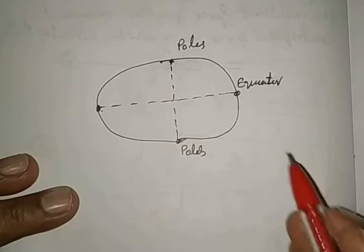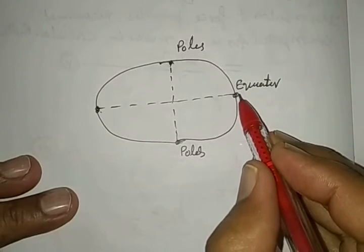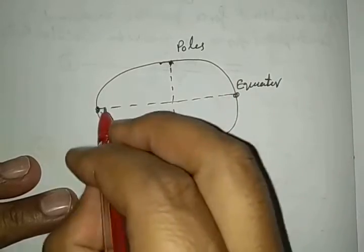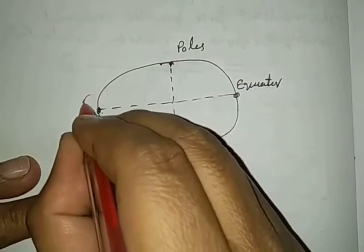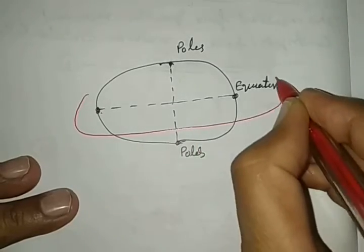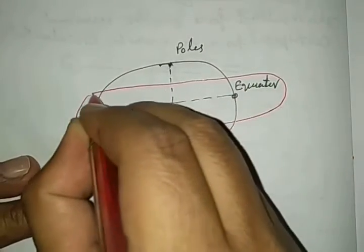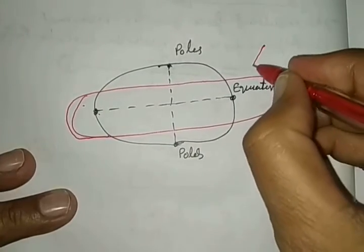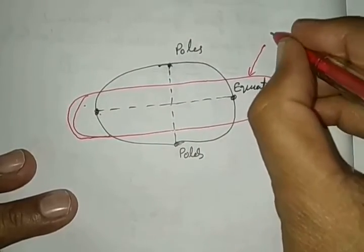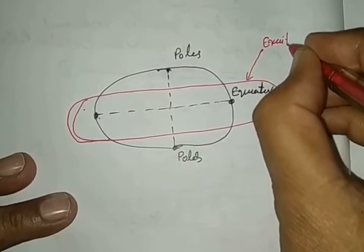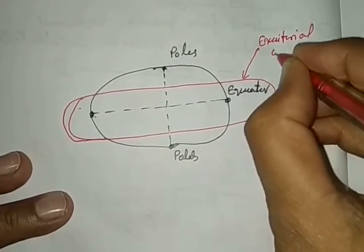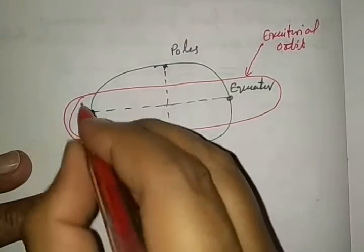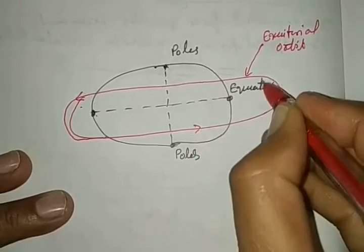There are two types of orbit of the Earth. One is known as equatorial orbit. This is shown in red color. It is known as equatorial orbit. Here, the equatorial orbit is in this way.